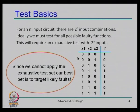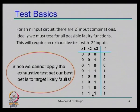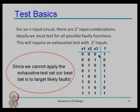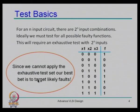Consider a three-input NAND gate and its truth table. We cannot apply all exhaustive test combinations. So we have to select a few test vectors that can target the kinds of faults or defects we are looking at. When we cannot apply the exhaustive test set, our best bet is to target likely faults.